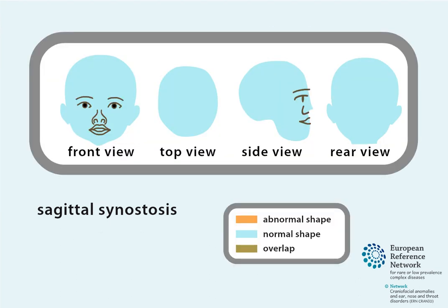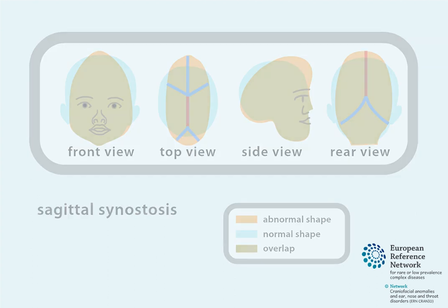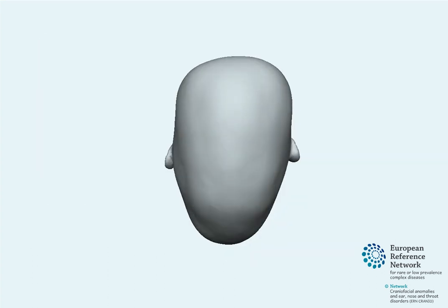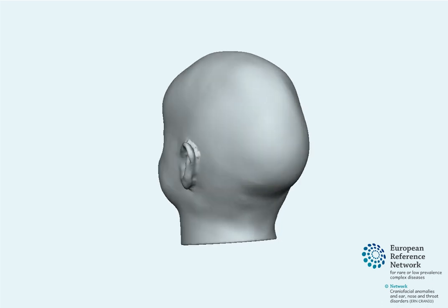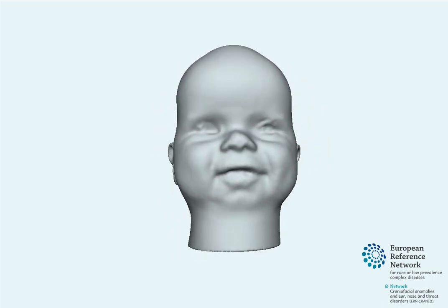In conclusion, sagittal synostosis is characterized by an elongated narrow skull, a ridge over the sagittal suture, a prominent forehead, anterior displacement of the vertex, and an occipital bullet. This is called scaphocephaly, as seen in the 3D image in the video.